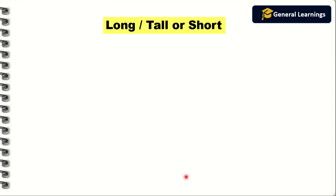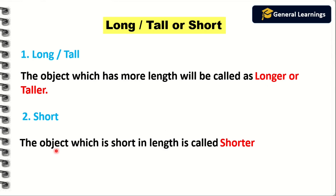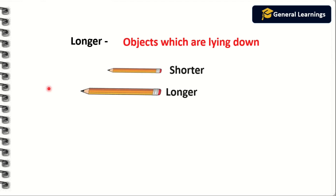Next we are going to see long or short. The object which has more length will be called longer or taller — any object whose length is more will be called longer. Short: the object which is short in length is called shorter. The word longer is used for objects that are lying down — any object lying down, we say that object is longer.